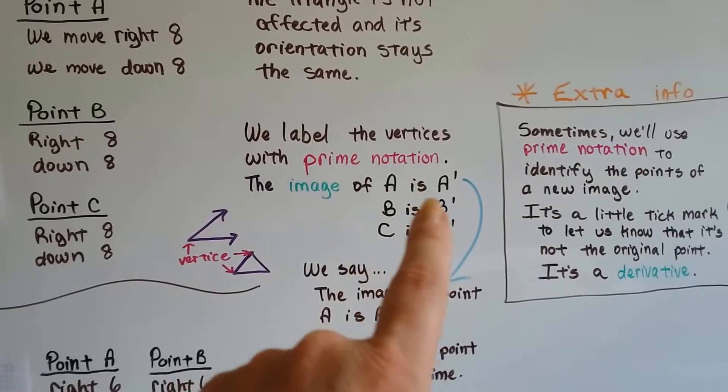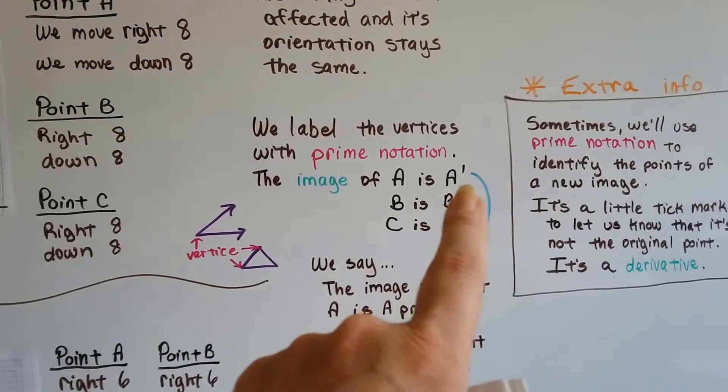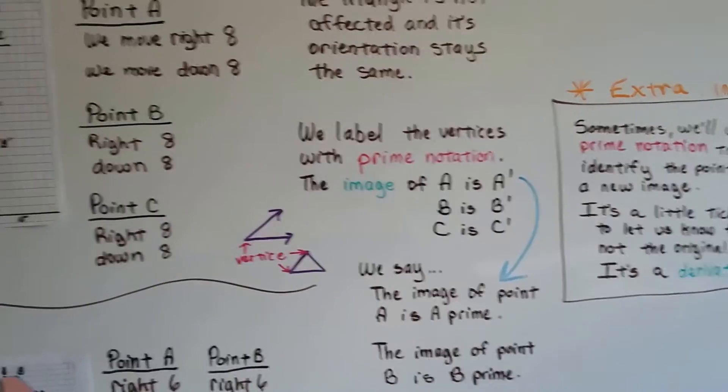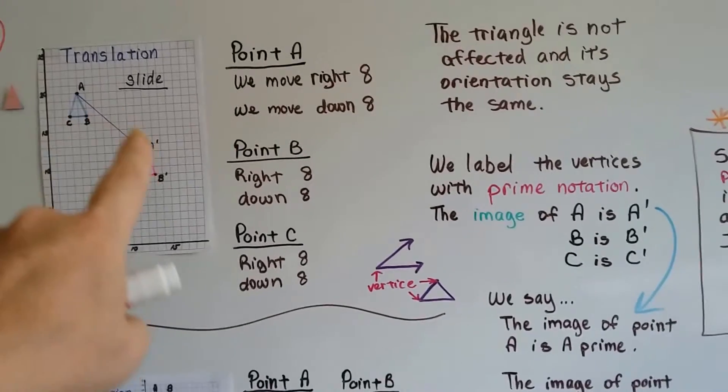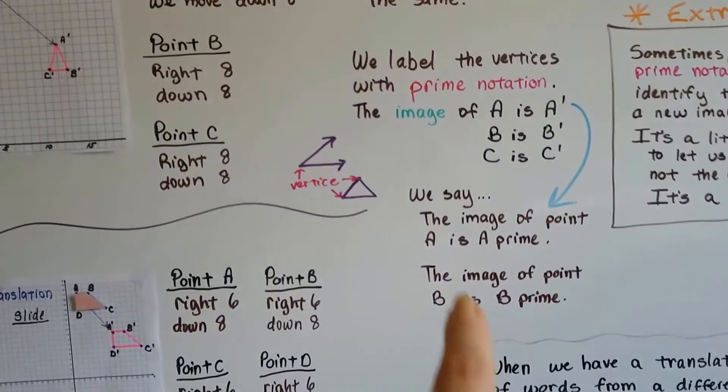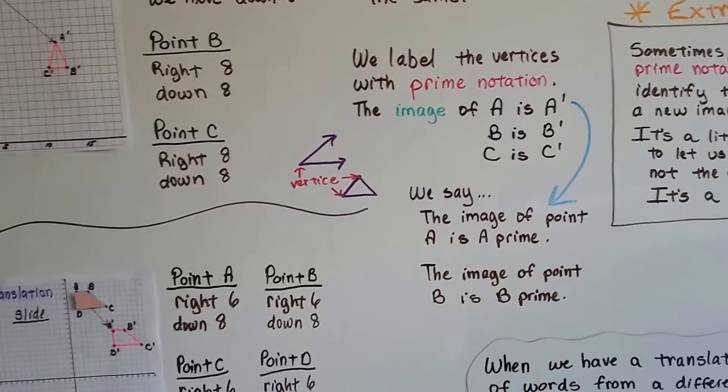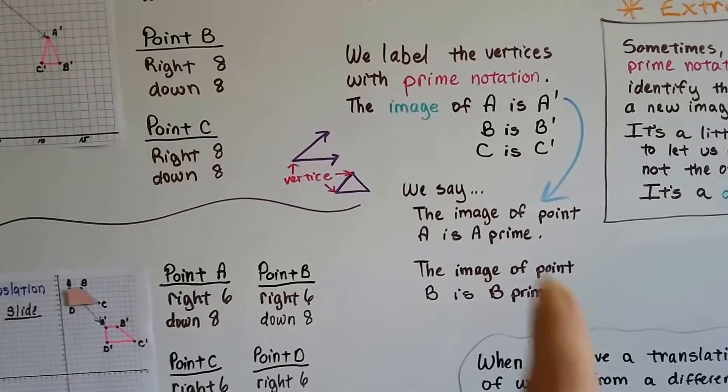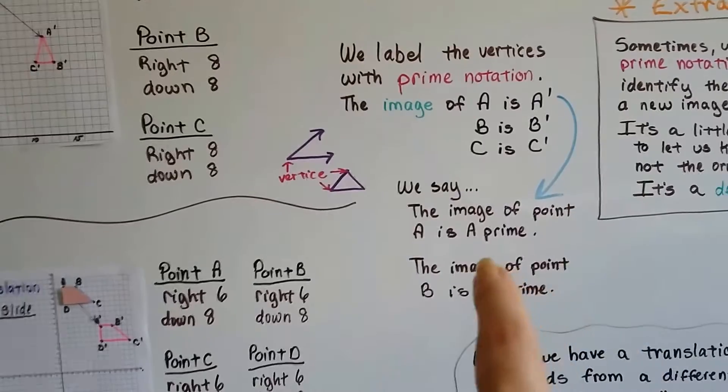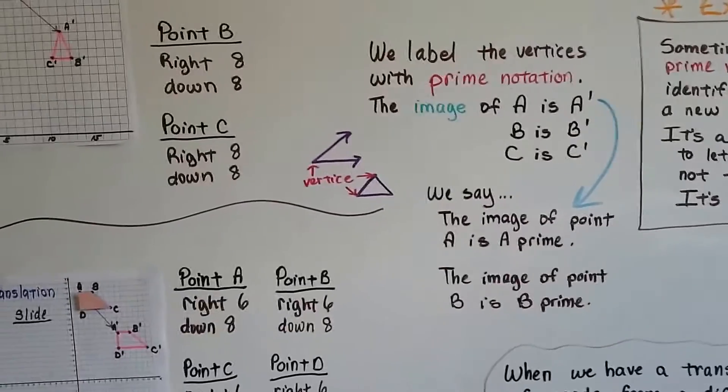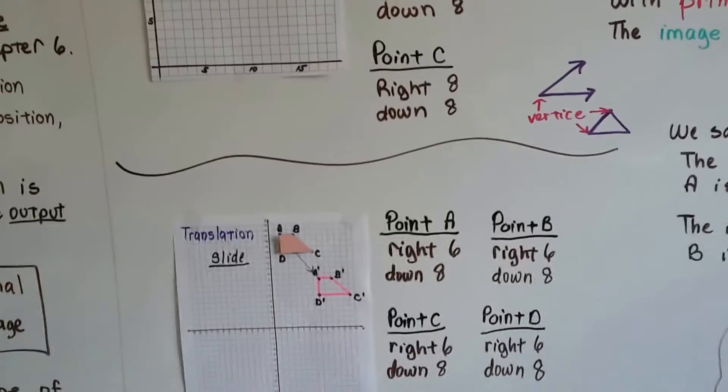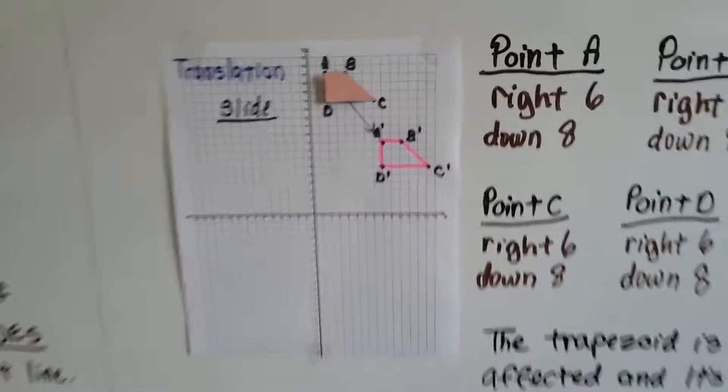So A is... the image of A is A prime. So it slid down, and we actually say that. The image of point A is A prime. The image of point B is B prime. The image of C is C prime. That's how you read it. So let's look at another one. Let's look at this one.